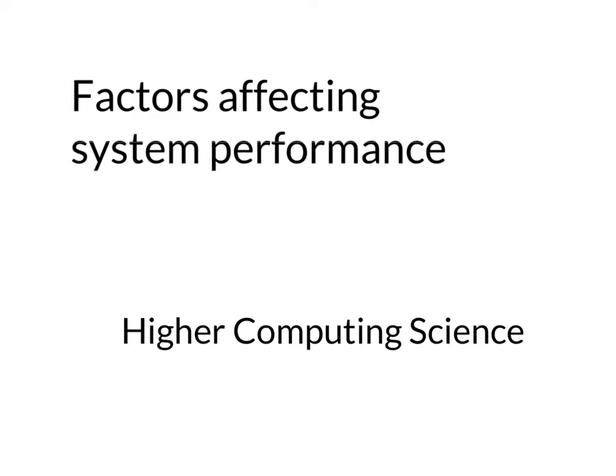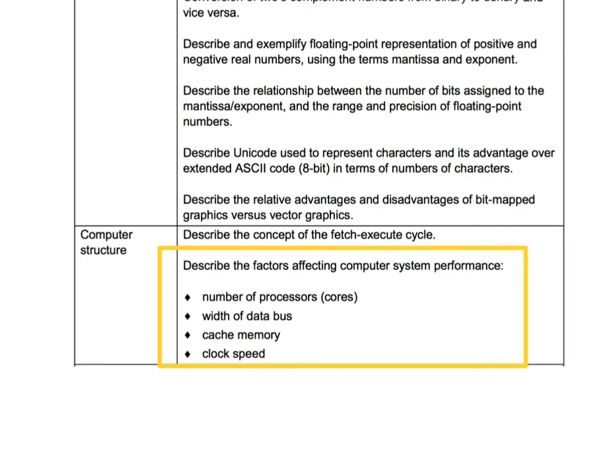Welcome to this presentation on factors affecting system performance. If we were to go to a computer shop and buy something like a printer, we'd probably know that one of the factors affecting performance would be resolution, another would be pages per minute — how fast the printer was going to be. But would you be able to go into a computer shop and buy a new laptop or desktop and know the factors which make it a good computer for your money? This theory comes under computer structure, in the computer systems topic, and covers four strands: factors affecting computer system performance, including number of processors and cores, width of the data bus, cache memory, and clock speed.